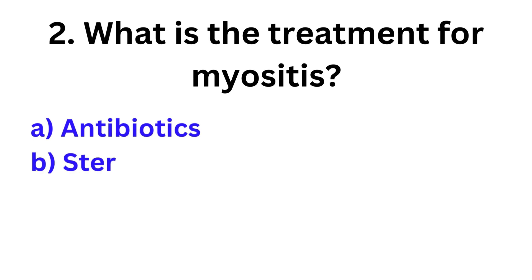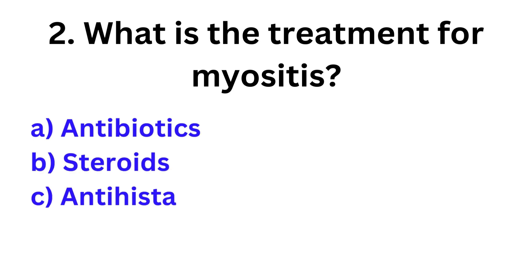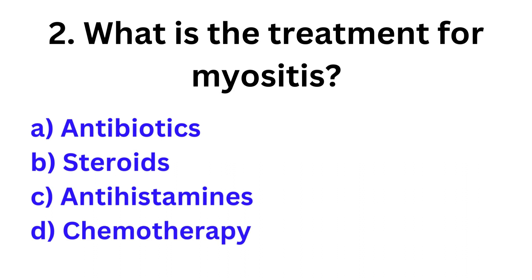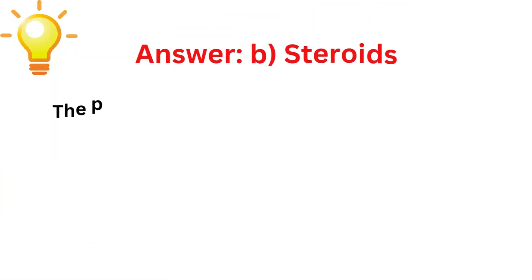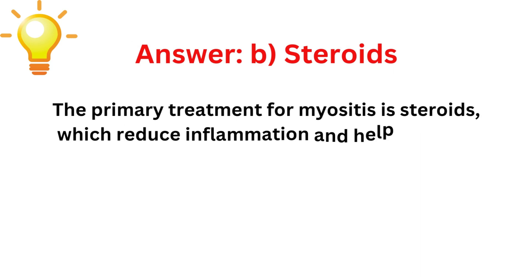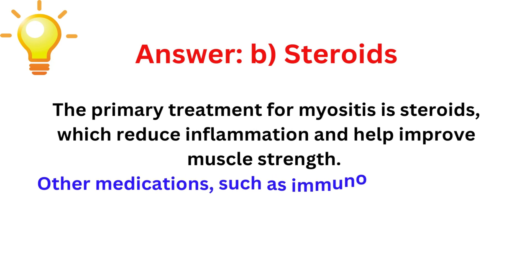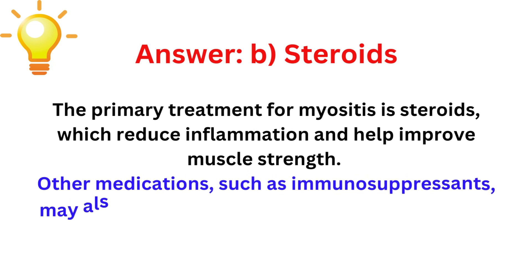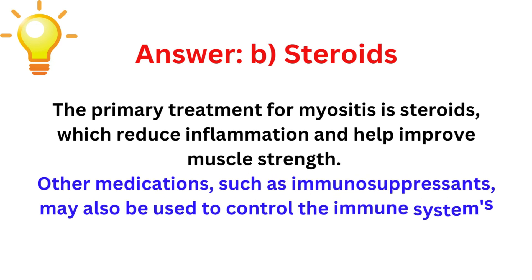Second question: What is the treatment for myositis? Options: antibiotics, steroids, antihistamines, chemotherapy. Correct answer is option B, that is steroids. The primary treatment for myositis is steroids, which reduce inflammation and help improve muscle strength. Other medications such as immunosuppressants may also be used to control the immune system's response.